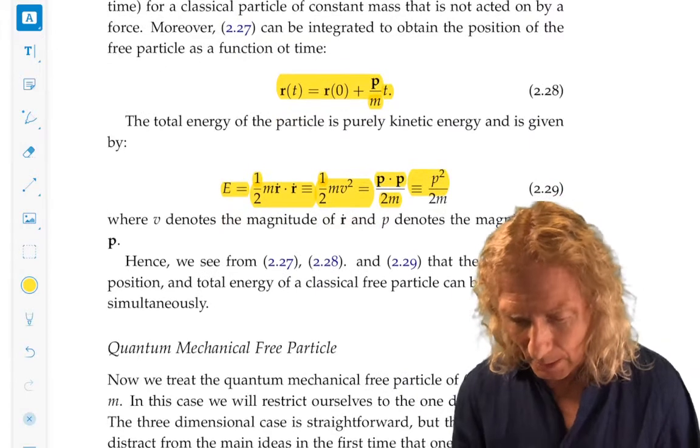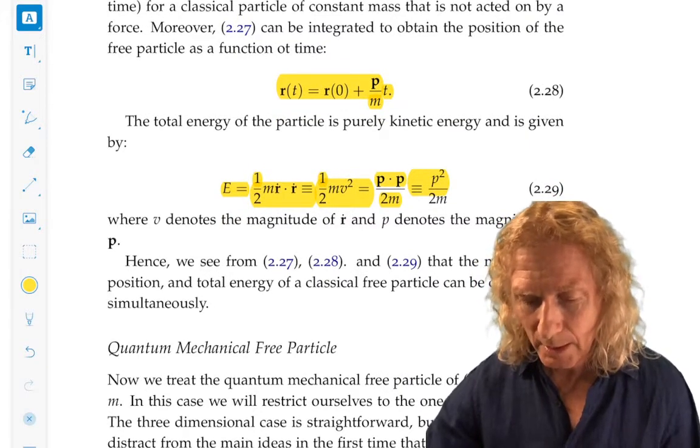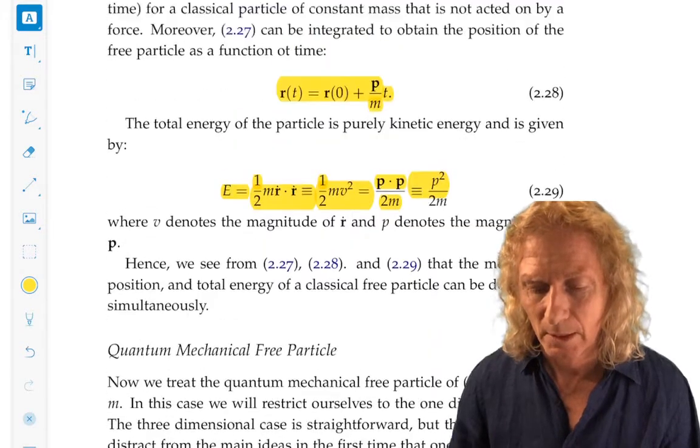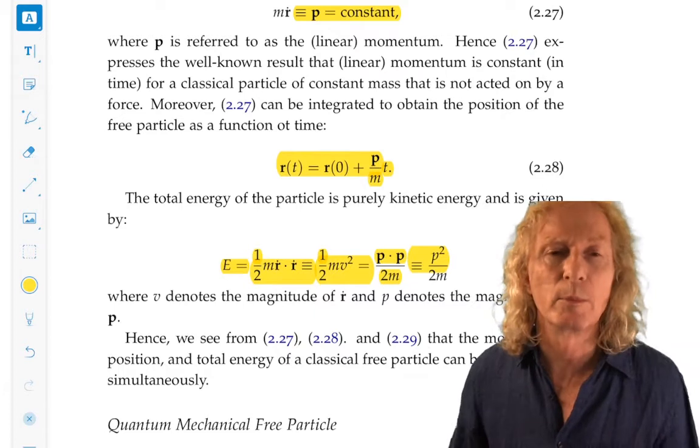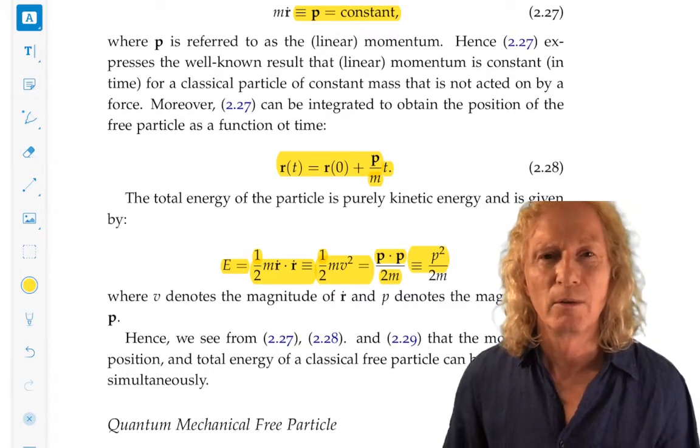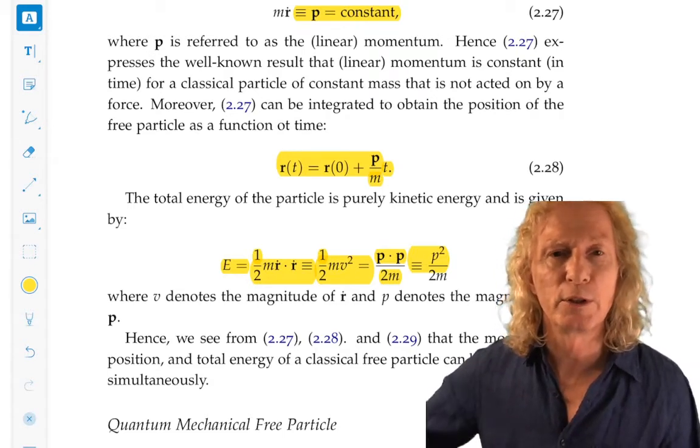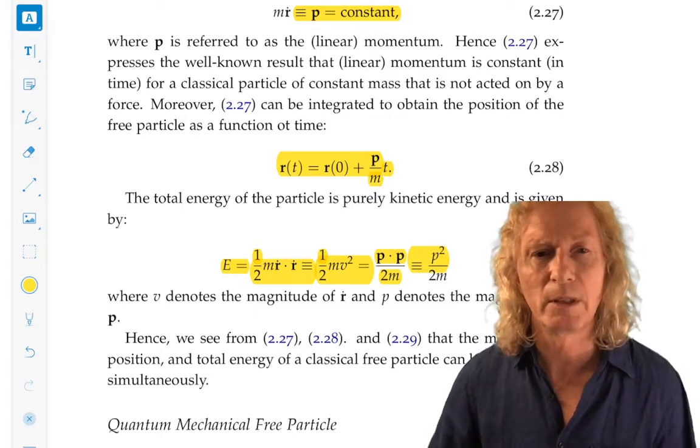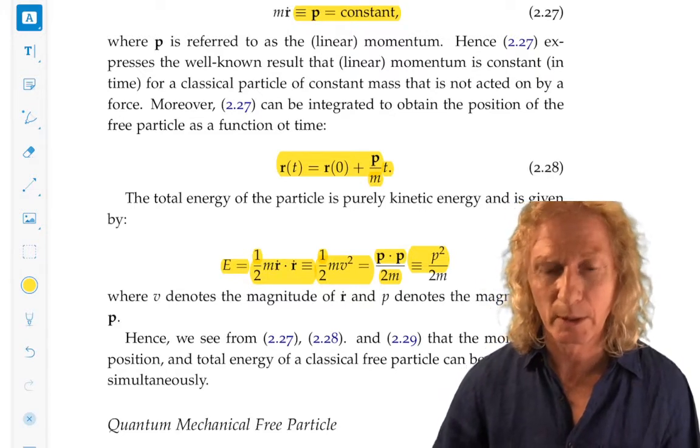We see, classical mechanically, that the momentum, the position, and the total energy of the free particle can all be determined simultaneously. Of course they can. That sounds like a weird thing to say. We know that if we toss a particle up in the air with appropriate measuring apparatus, we can measure velocity, if we know its mass we can get momentum, position as a function of time, we can use momentum to get energy. We can get them all at the same time in principle. I only point that out because that's going to be a problem quantum mechanically.